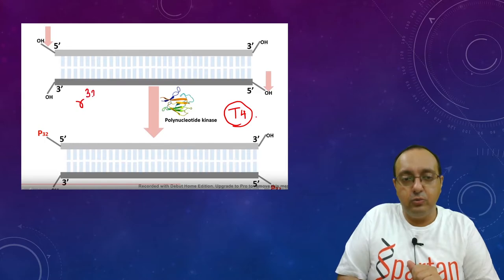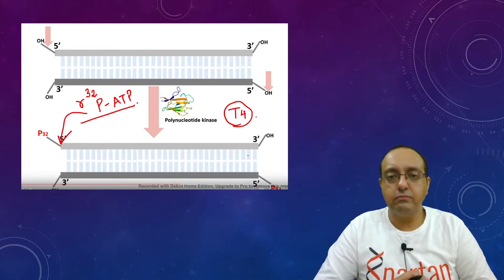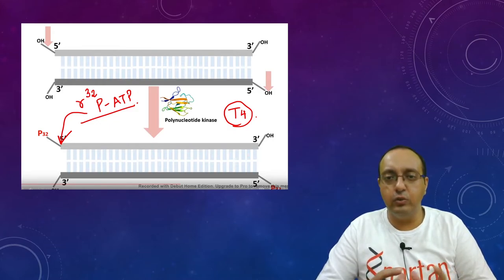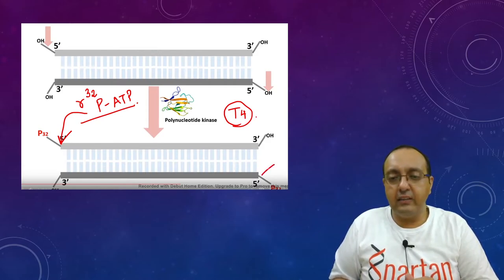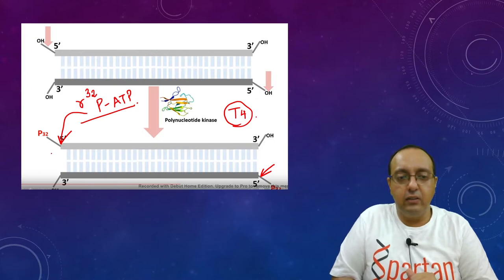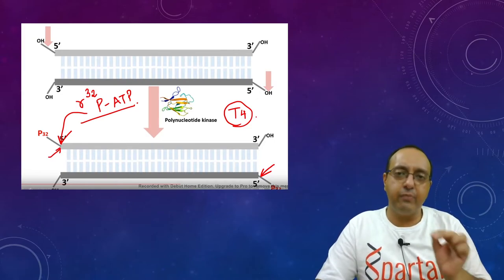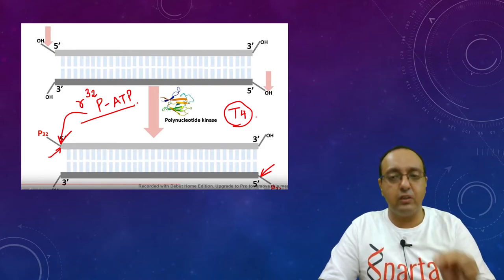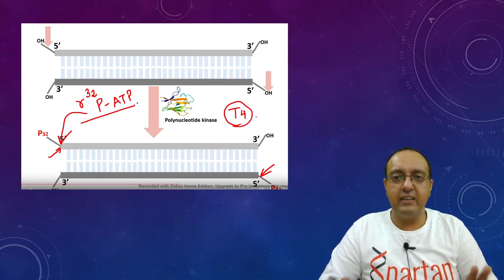This is used to add gamma-P32 labeled ATP, and this adds it here. Then what we can do is we can remove this and only at the 5' ends we can have the single-stranded DNA, and we have only the 5' end labeled. This is extremely important for this technique to work—we don't want both the strands labeled.